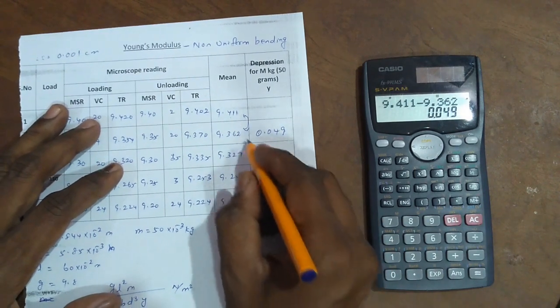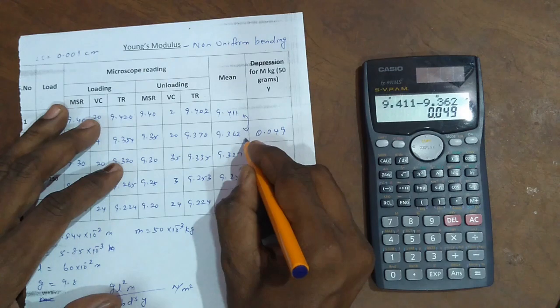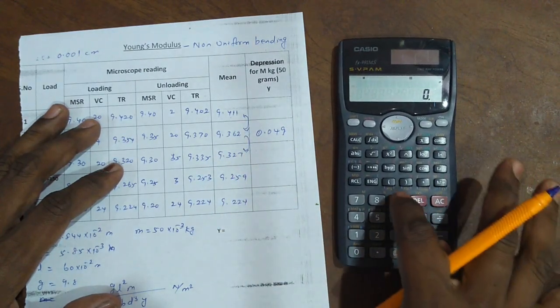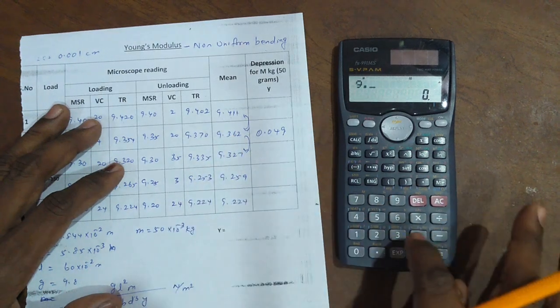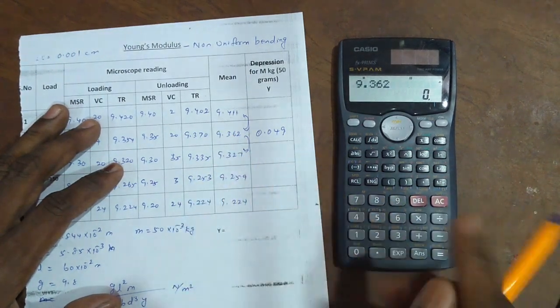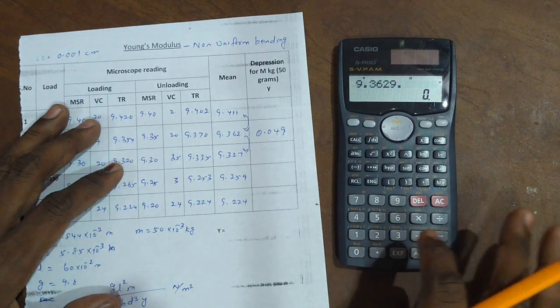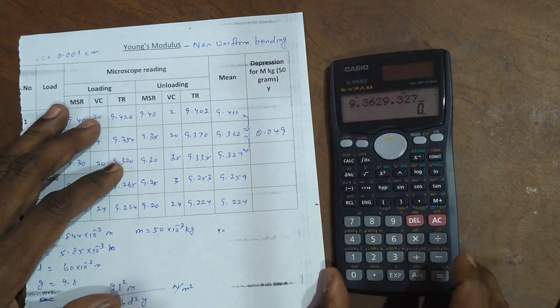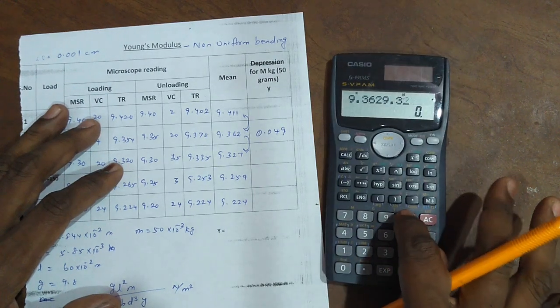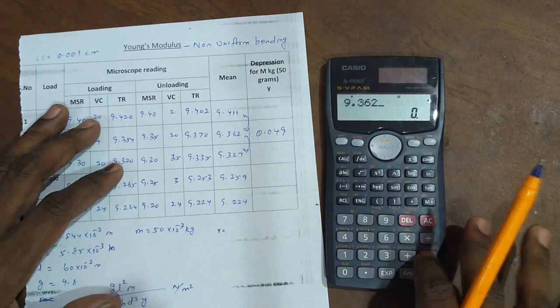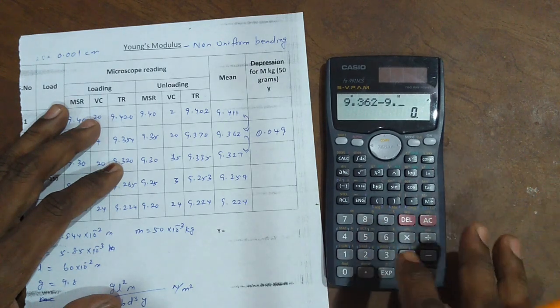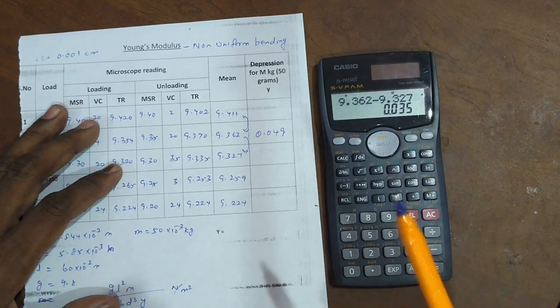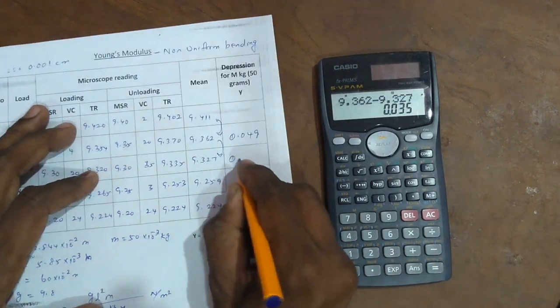Next, another depression by 50 grams: 9.362 minus 9.327. The answer is 0.035.